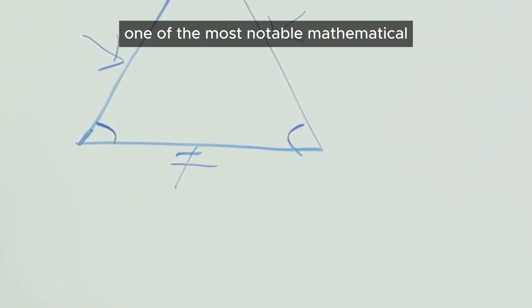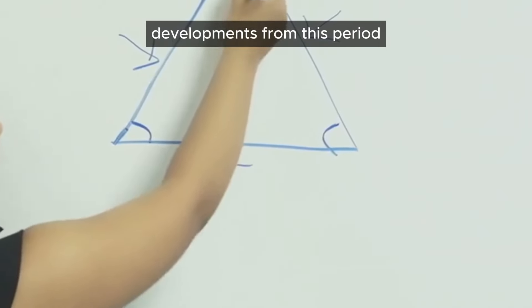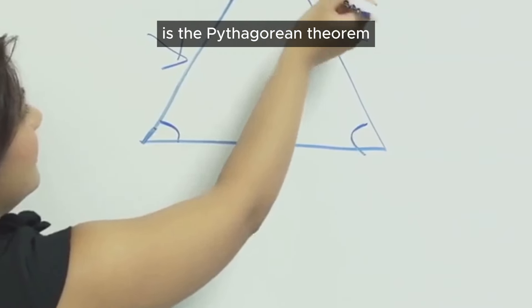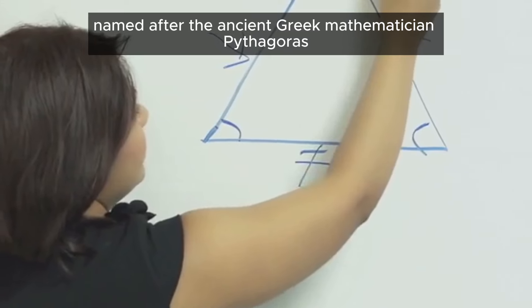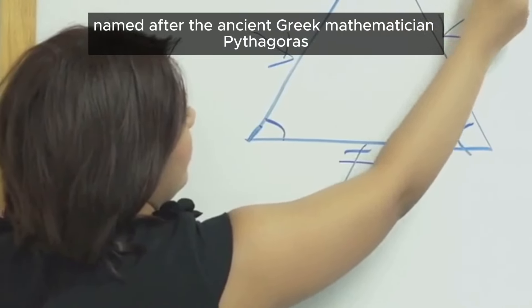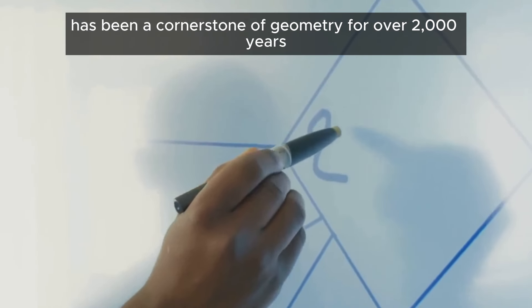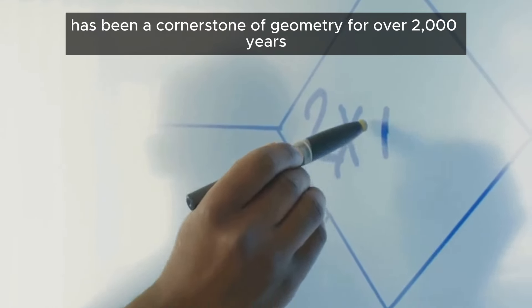One of the most notable mathematical developments from this period is the Pythagorean theorem. Yes, the one we all grappled with in high school, named after the ancient Greek mathematician Pythagoras. This theorem has been a cornerstone of geometry for over 2,000 years.